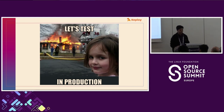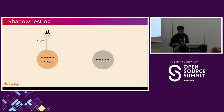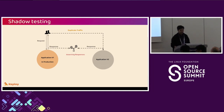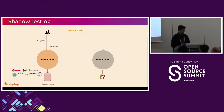Let's take an example of shadow testing. I'll walk you through a couple of approaches we tried. We had application v1 in production and created application v2. We used a service mesh to replicate or mirror live traffic, then compared the request and response for both v1 and v2. The problem was these are stateless applications — we were just comparing JSON responses — and this did not work well once we introduced dependencies like Twilio, MongoDB, and Stripe for payment gateways.